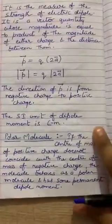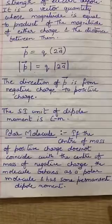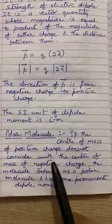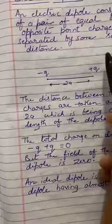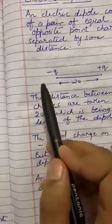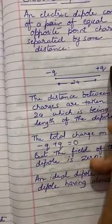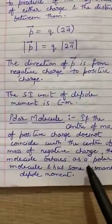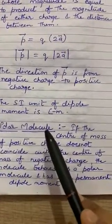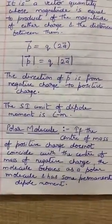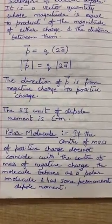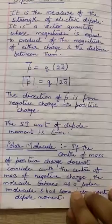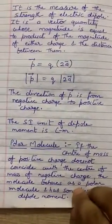Now, what is a polar molecule? If the center of mass of the positive charge does not coincide with the center of mass of the negative charge, then that combination is known as a polar molecule. Every polar molecule has some permanent dipole moment, because there is a direction from negative to positive, giving a permanent dipole moment.